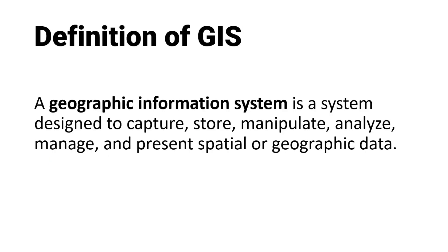Definition of Geographic Information System: A geographic information system is a system designed to capture, store, manipulate, analyze, manage, and present spatial or geographic data. GIS applications are tools that allow users to create interactive queries, analyze spatial information, edit data in maps, and present the results in the form of maps or websites.